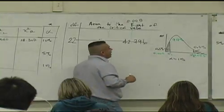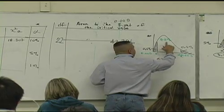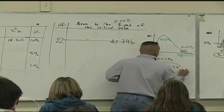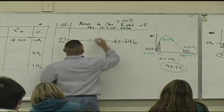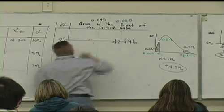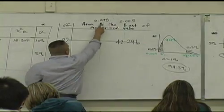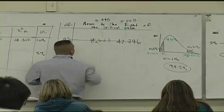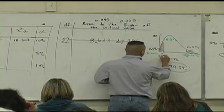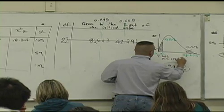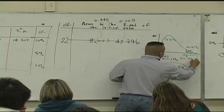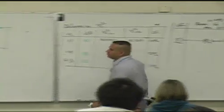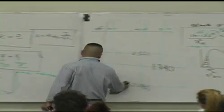And then what do you have? Area to the right of that value. 99.5 is? 99.5%. So that's going to be .995. What value do you see in the 22nd row, .995 column? 8.643. So here we go.